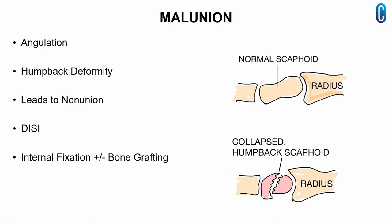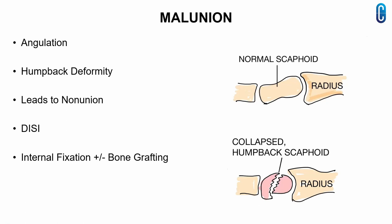Malunion is managed operatively with internal fixation with or without bone grafting. This x-ray shows malunion of the scaphoid with the characteristic humpback deformity.